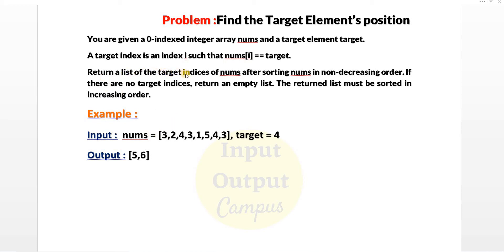You have to first sort the array nums in non-decreasing (increasing) order, then return a list of target indices where nums[i] equals target. If there are no target indices, return an empty list. The returned list must also be sorted in increasing order.